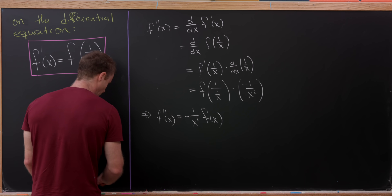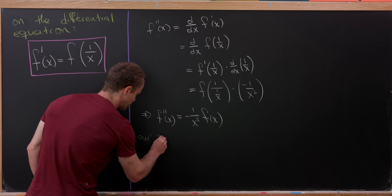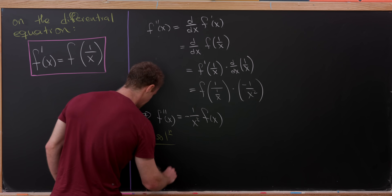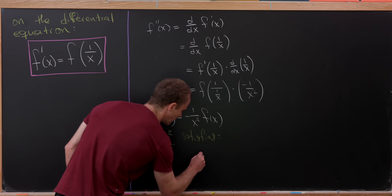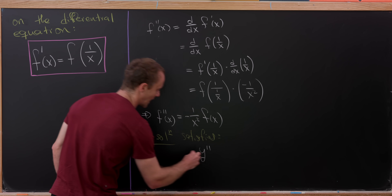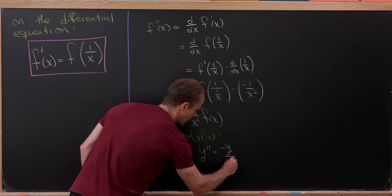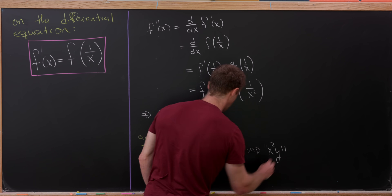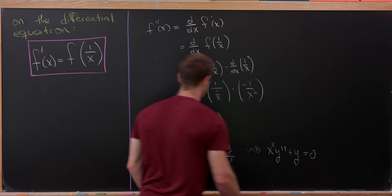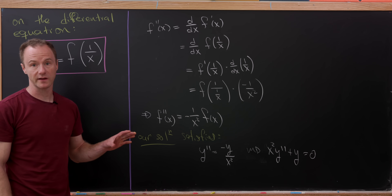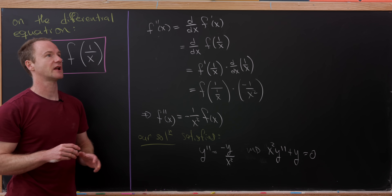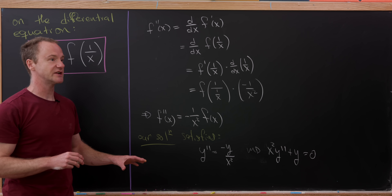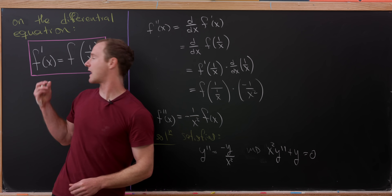This leaves us with f double prime of x equals negative 1 over x squared times f of x. In other words, our solution must satisfy the more traditional differential equation y double prime equals negative y over x squared, which is more typically written as x squared times y double prime plus y equals zero. That's a Cauchy-Euler differential equation, which you generally learn how to solve in a standard differential equations class.